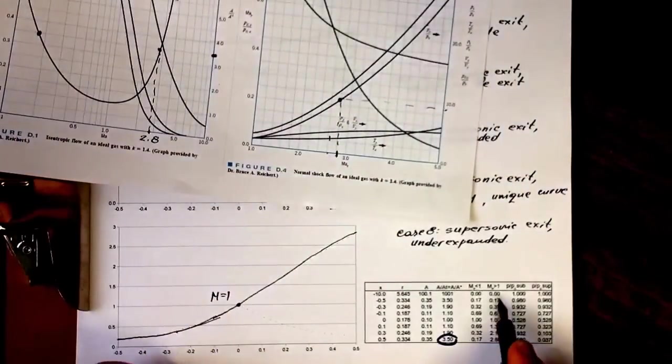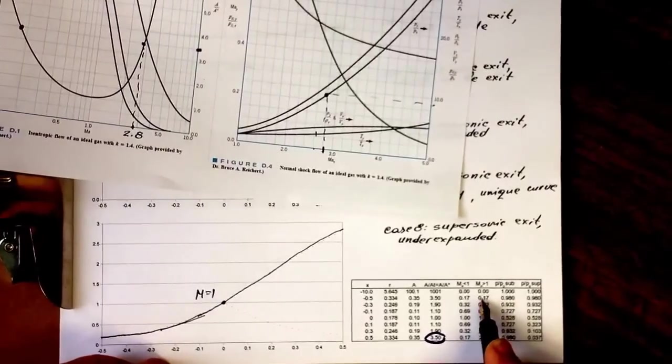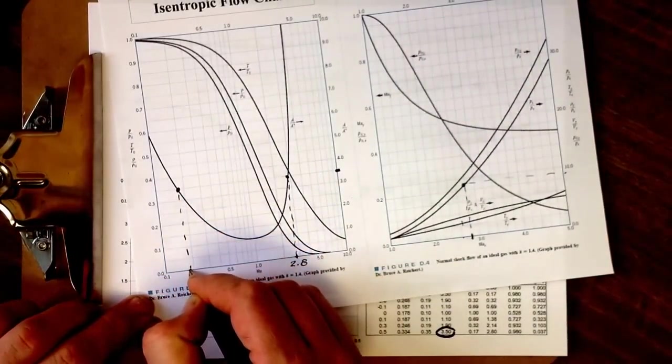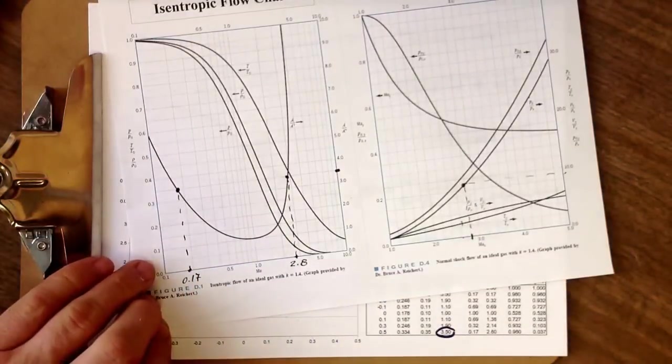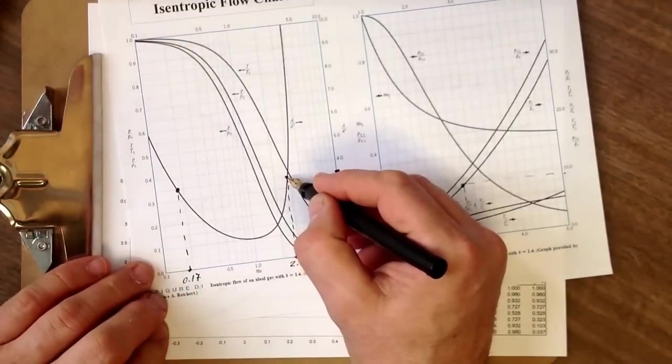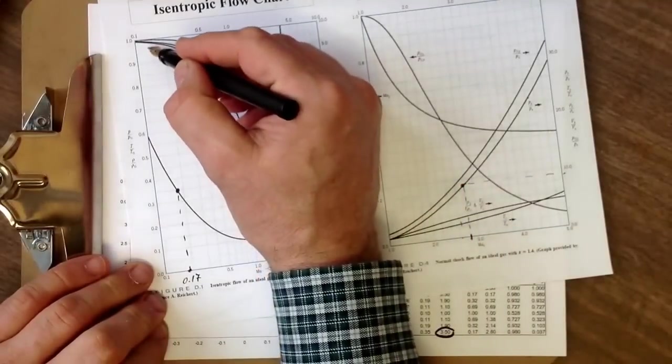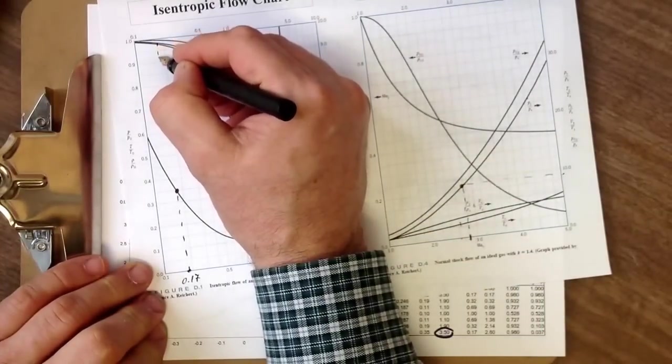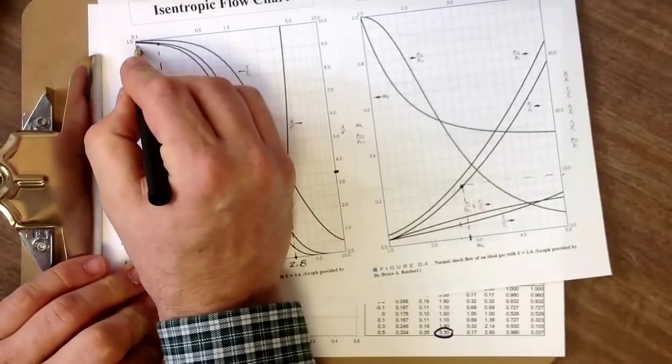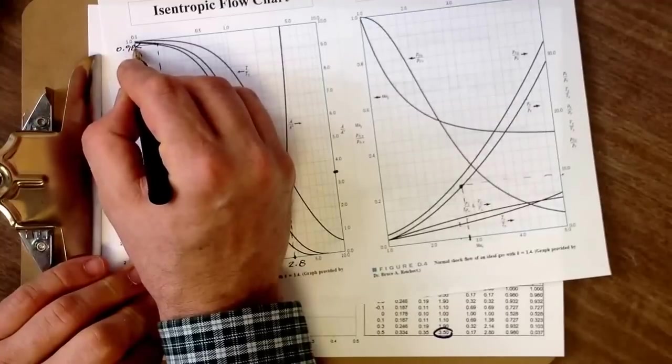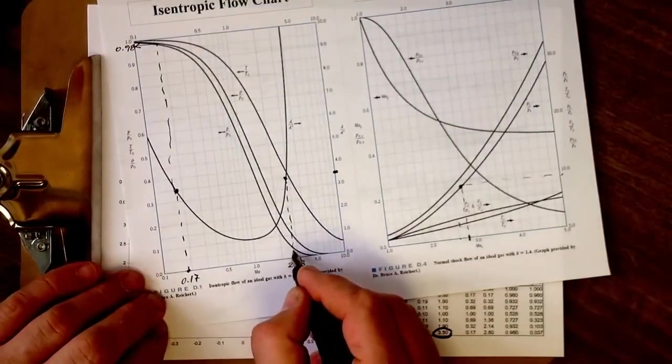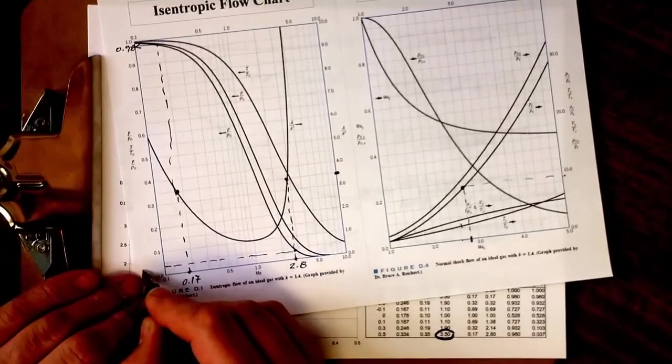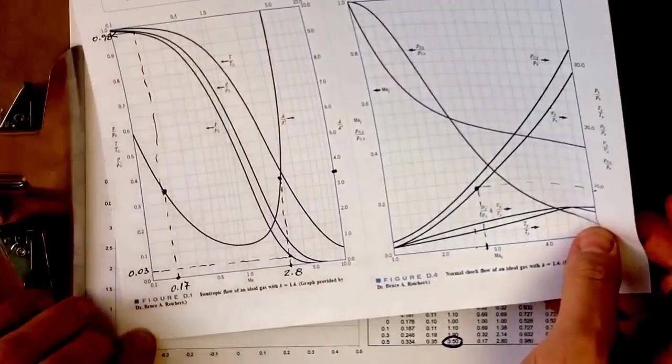You can see here Mach number in supersonic regime of 2.8, and at the start it's 0.17. For this particular case, our pressure change is following this curve between these two Mach numbers. For pressure, we go to the left at 0.98 and then all the way down to 0.03. You can see that it's a huge difference.